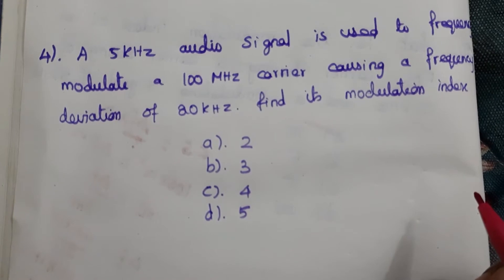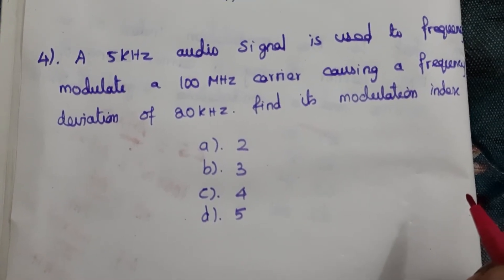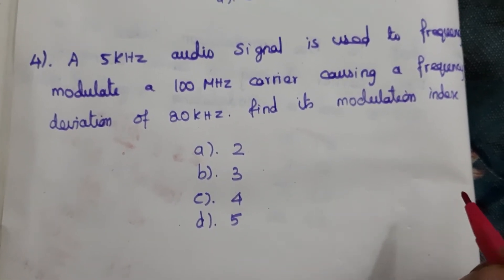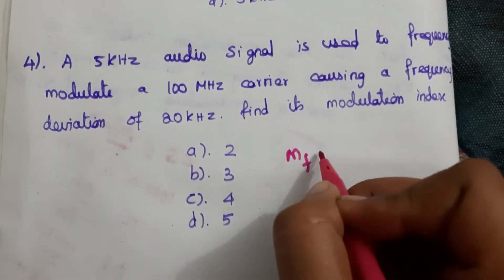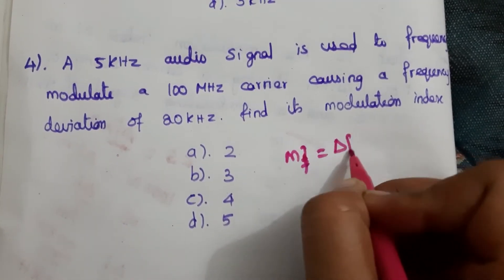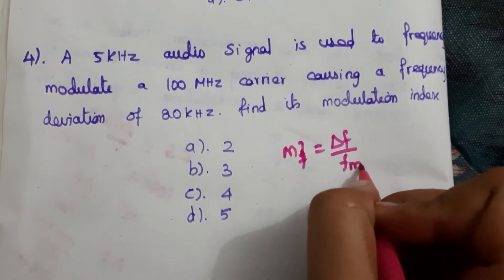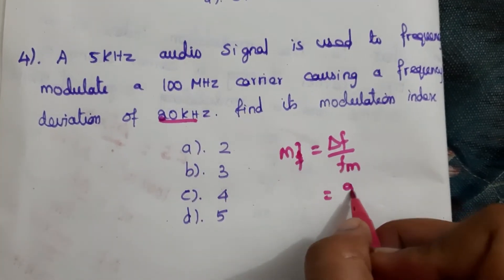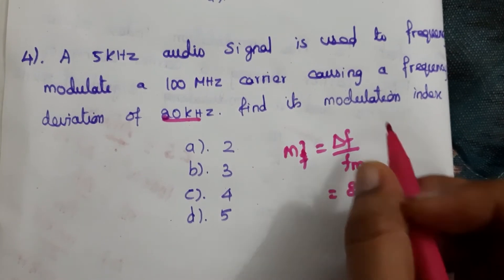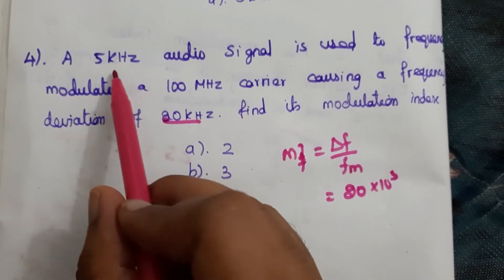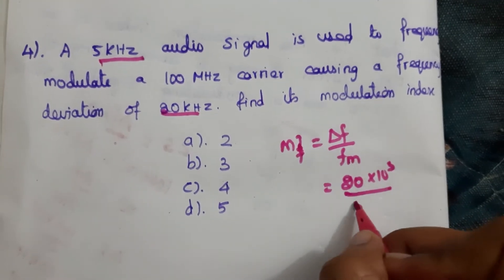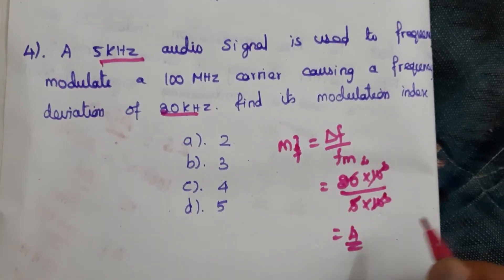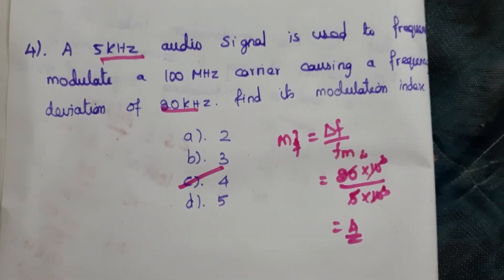Fourth question: A 5 kHz audio signal is used to frequency modulate a 100 MHz carrier, causing a frequency deviation of 20 kHz. Find the modulation index. Modulation index = frequency deviation / message frequency = 20kHz / 5kHz = 4. The answer is C.